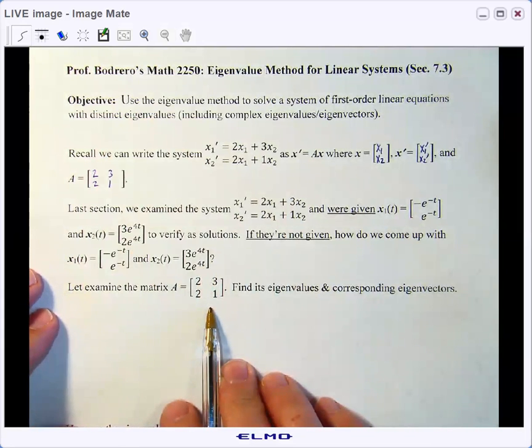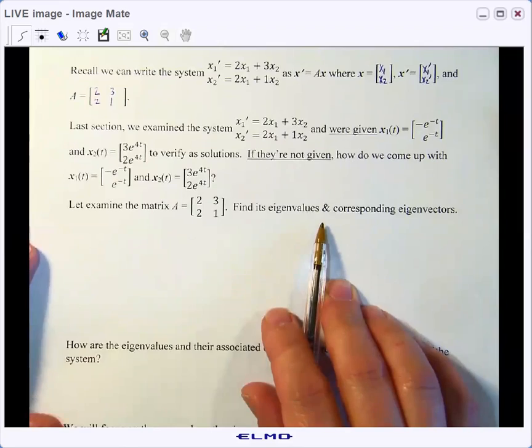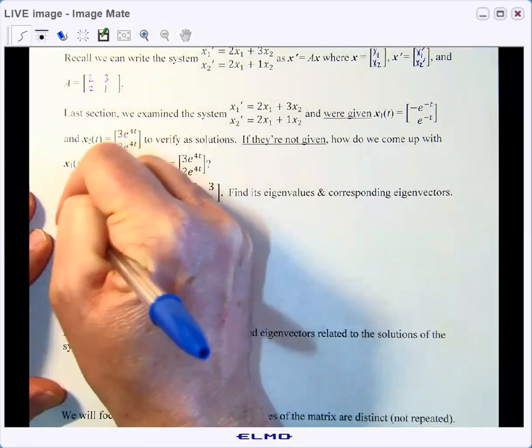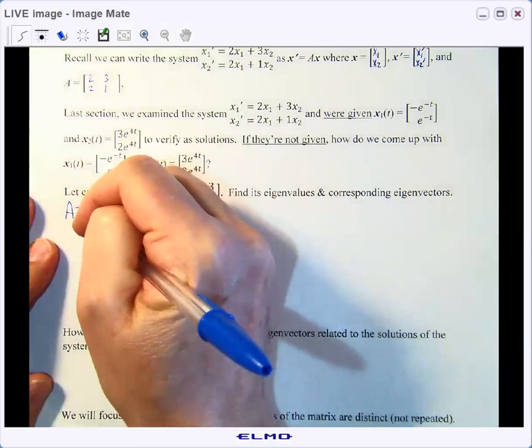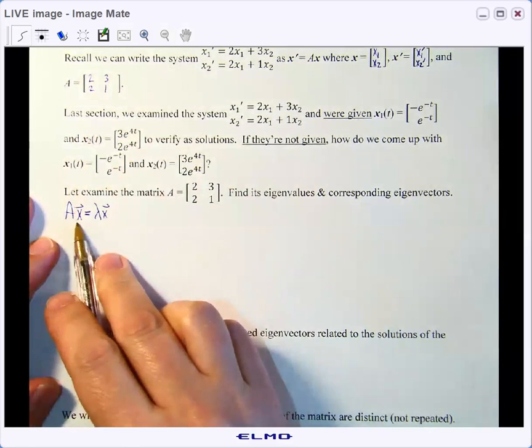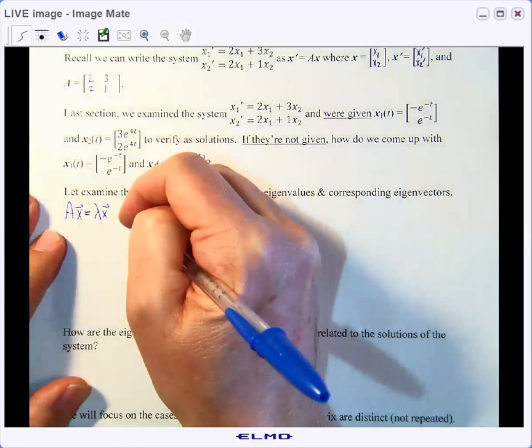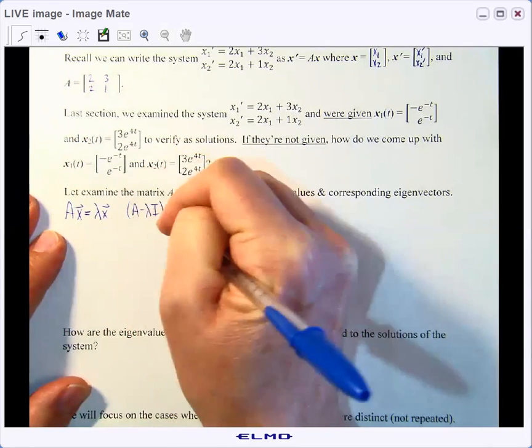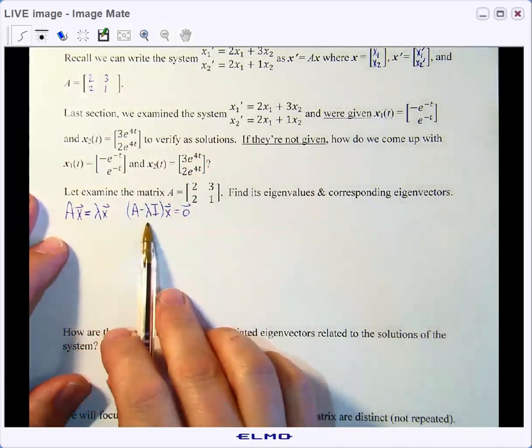Let's take the matrix A here, 2, 3, 2, 1. Let's find its eigenvalues and corresponding eigenvectors, and then we'll see if we notice anything really cool. Remember that eigenvalues, eigenvectors are something of the form Ax equals lambda x, so the matrix multiplication is really equivalent to a scalar multiplication, and if we did a little bit of matrix algebra, A minus lambda I times x is equal to the zero vector.